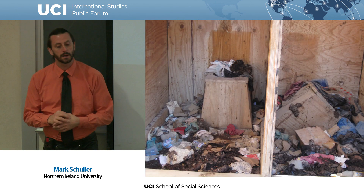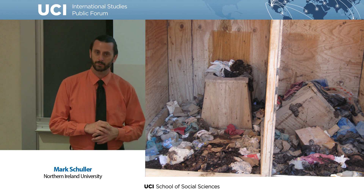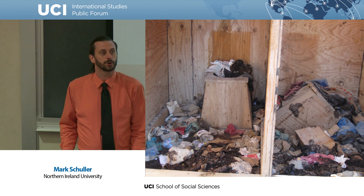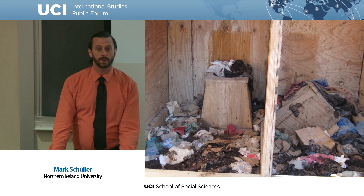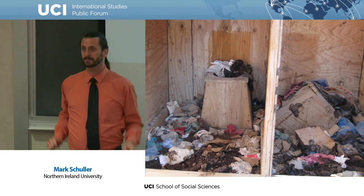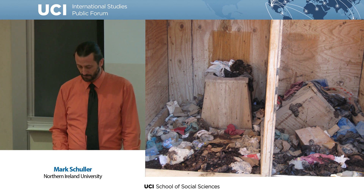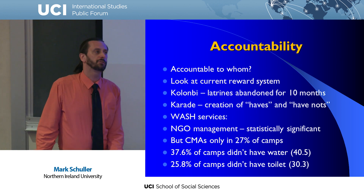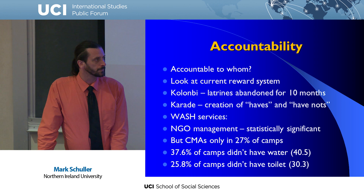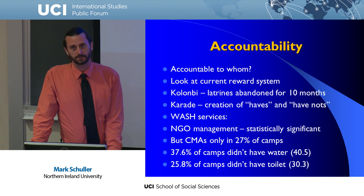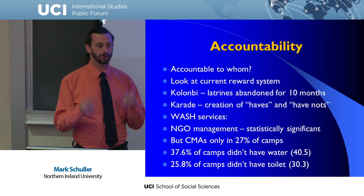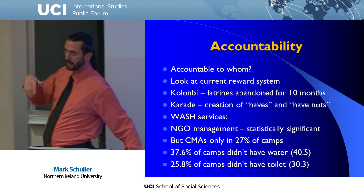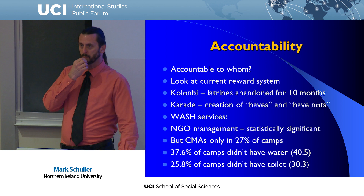This photo shows what NGOs can do to a place — a latrine installed by an NGO with photos taken as a success story, but then abandoned for the next ten months. This brings up the issue of accountability within NGOs: NGOs are accountable to whom? There's been much literature showing that NGOs have accountability to their donors and governments, and not to the recipients — not downward accountability.